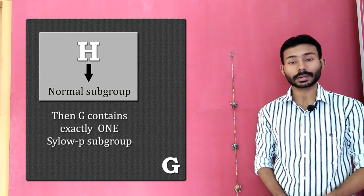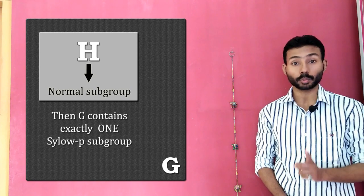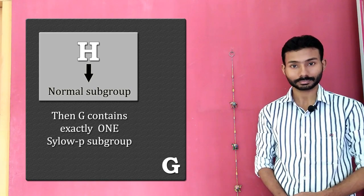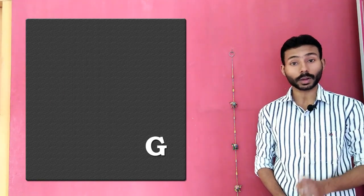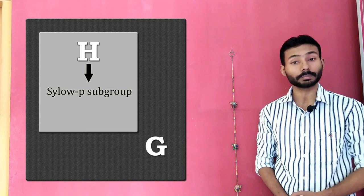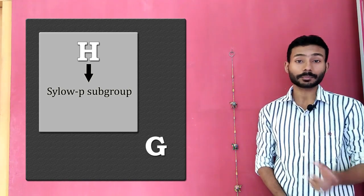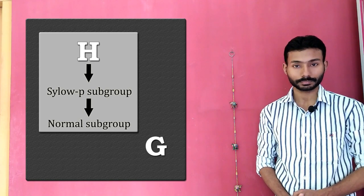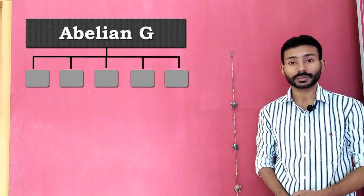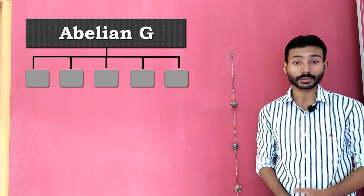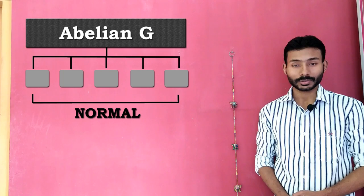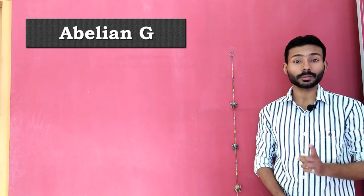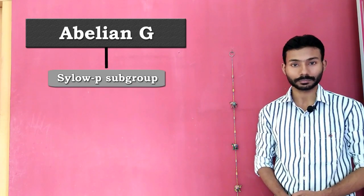then the number of Sylow p-subgroups of that group must be exactly one. Similarly, if a group contains exactly one Sylow p-subgroup for any prime number p, then that subgroup must be a normal subgroup of the given group. Since every subgroup of an abelian group is a normal subgroup, an abelian group contains exactly one Sylow p-subgroup for any prime number p.